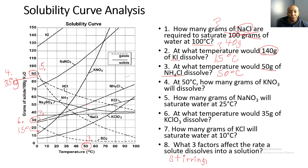Number four: at 50 degrees Celsius, how many grams of KNO₃ will dissolve? Here's 50 degrees Celsius — take it up until it hits KNO₃, bring it over, and that's going to be 85 grams.